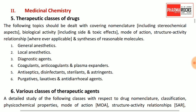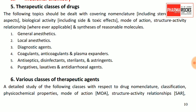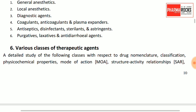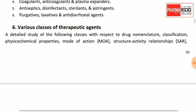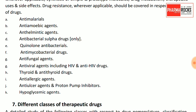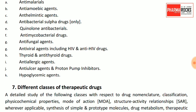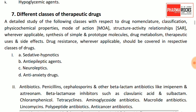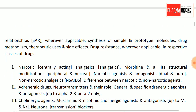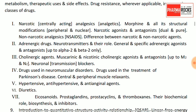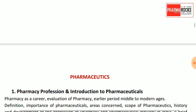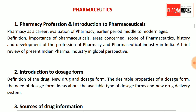From medicinal chemistry, you have to study therapeutic classes of drugs — general anesthetics, local anesthetics, diagnostic agents, coagulants, anticoagulants, antiseptics, disinfectants, purgatives, laxatives, antimalarials, antibacterials, sulfa drugs, quinolones, antifungals, antivirals, antiulcer, hypoglycemic agents, sedatives, and hypnotics. Structure-activity relationships (SAR) and IUPAC nomenclature are especially important.